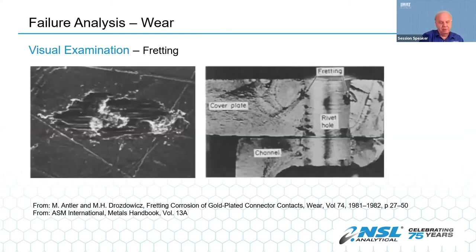Regarding wear, most wear is pretty easy to identify, like the scraping on the left. Fretting is a particular type of wear that is somewhat more complicated. Fretting occurs when you have two surfaces that are locked together but in opposed motion, and just vibration is enough. The designer usually considers them fixed, so they're not expected to wear. It ends up as a fatigue failure — the crack starts in the abraded area.